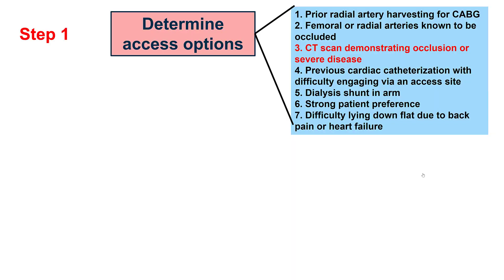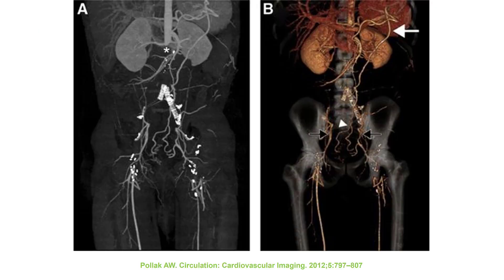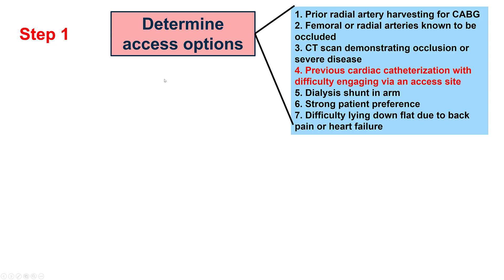Sometimes we don't have an angiogram; however, a CT scan is done. This is an example of a CT showing occlusion of the distal aorta, distal to the renal artery takeoff. Once again, in this patient, femoral access is not an option and radial access should be performed.